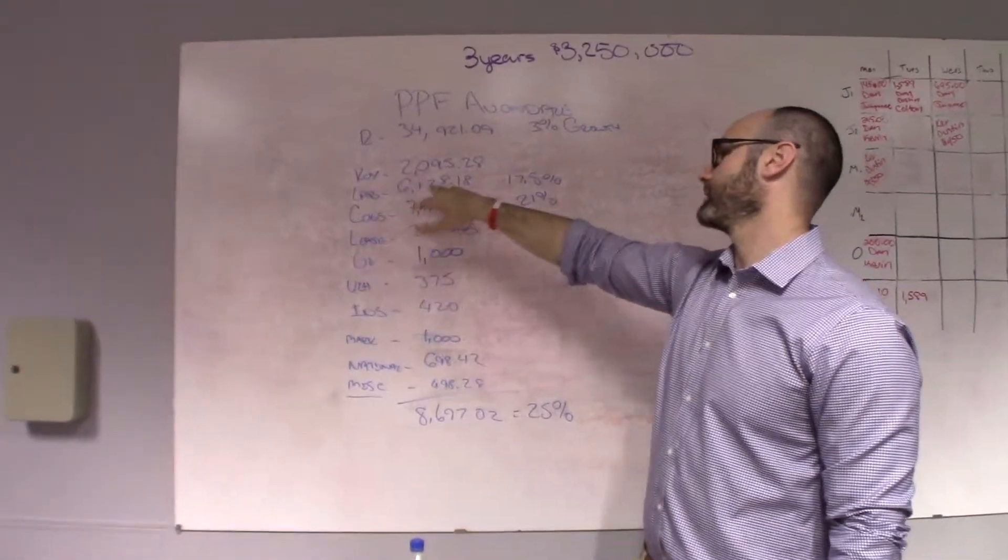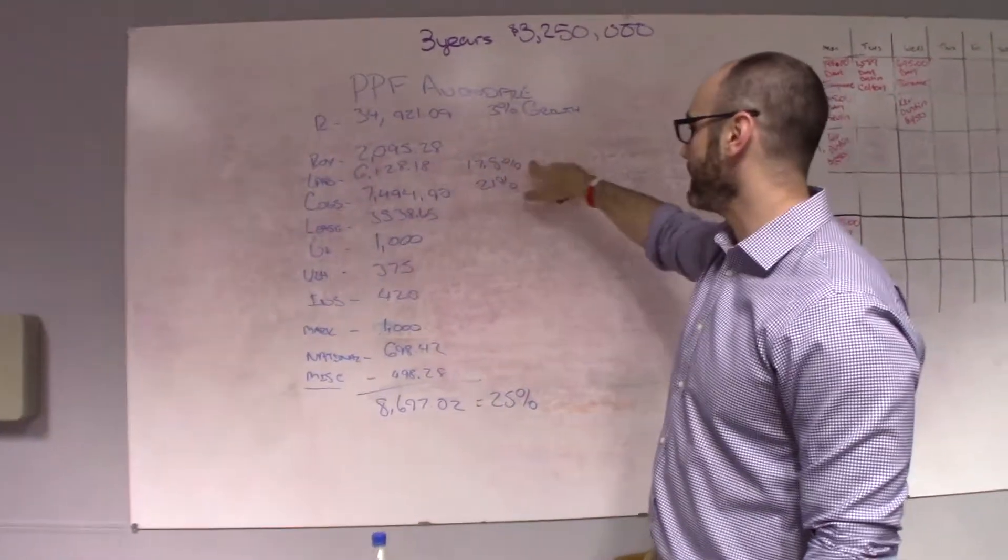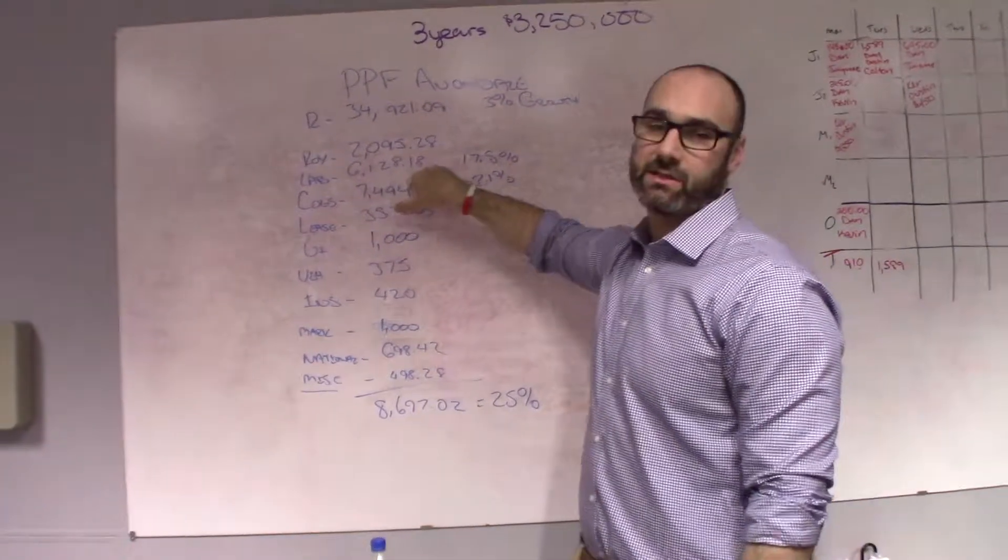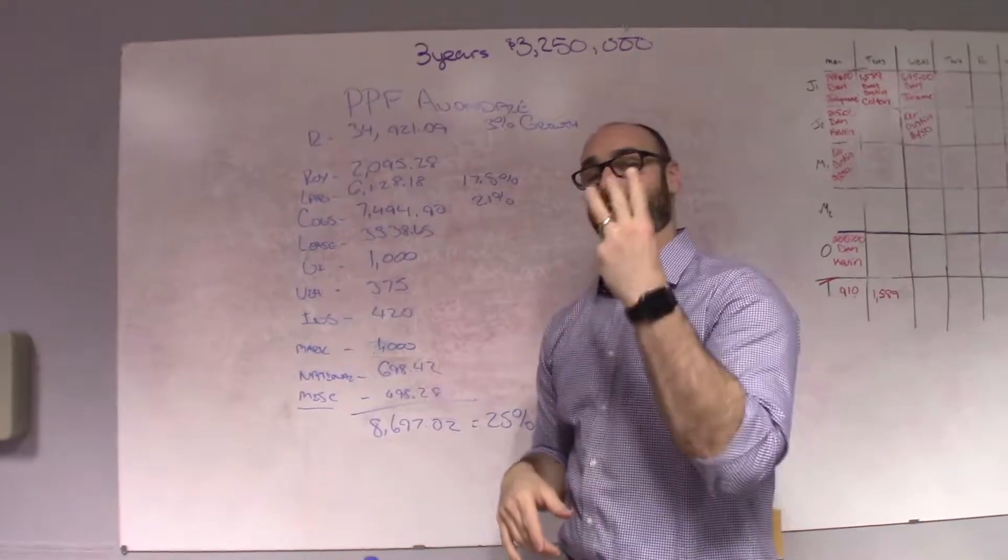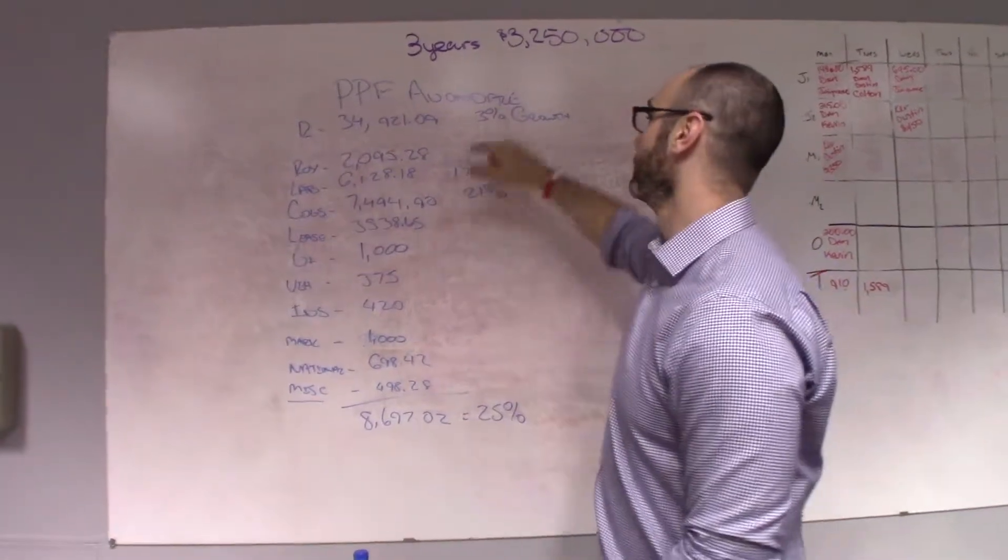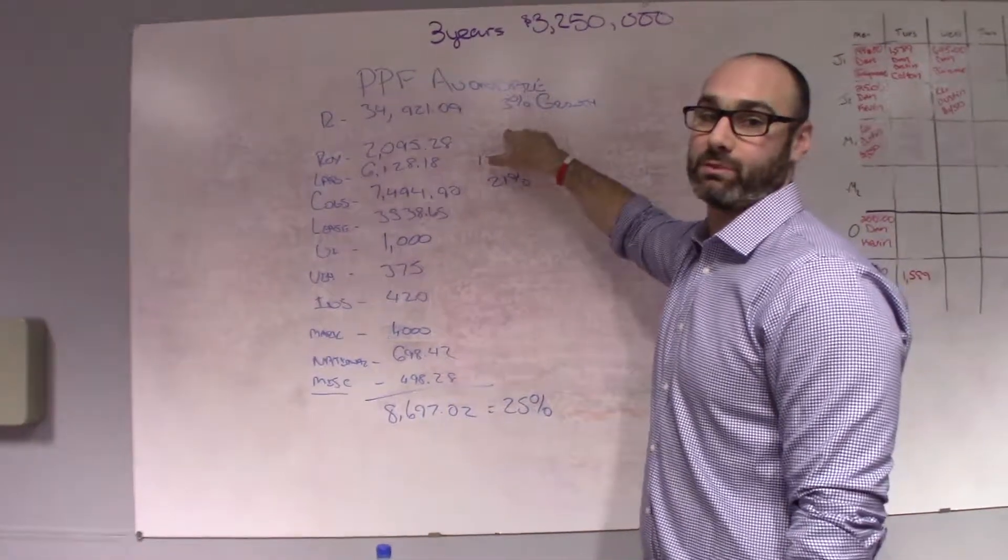Labor costs, $6,128.18, which came down to 17.5%. Now, the reason it's so low was we had three snow days. So, three days we were not in the store at all because we had to be closed, which also results in why we were only 3% off.